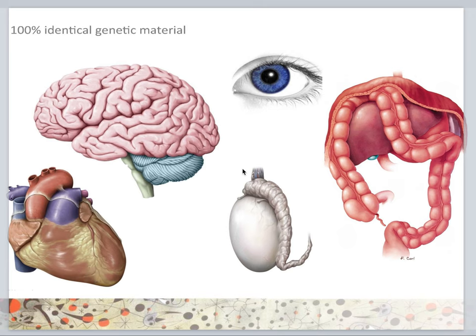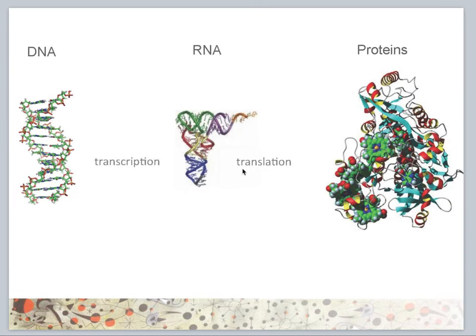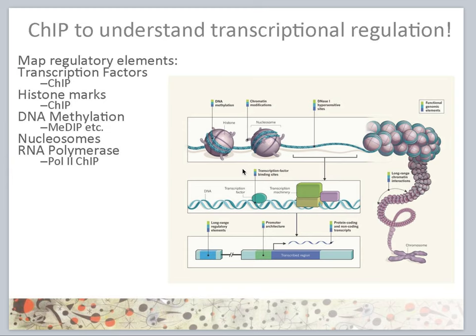If we go back to the central dogma of cellular and molecular biology, where DNA is transcribed into RNA, which is translated into proteins, we cannot explain that. This implies that there may be regulatory mechanisms for doing this. ChIP is one way to understand this transcriptional regulation.